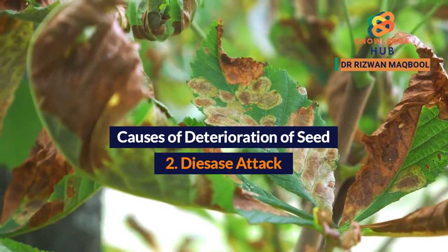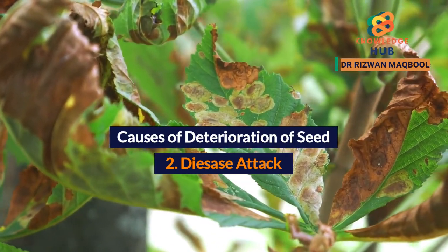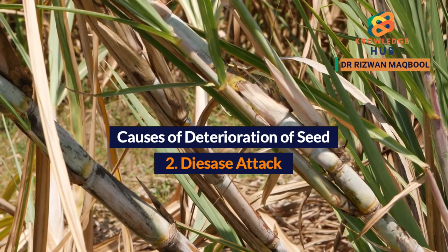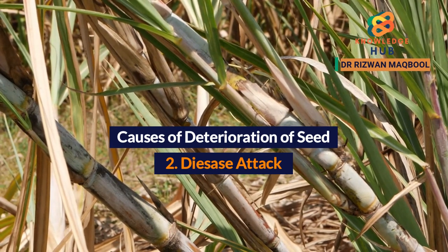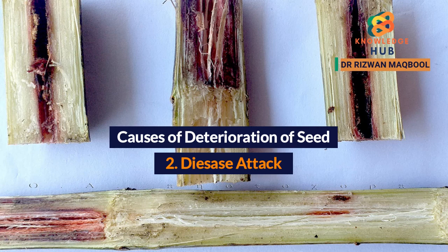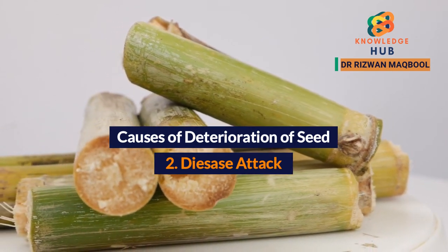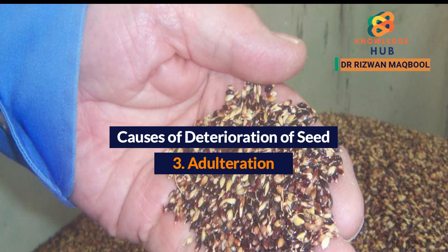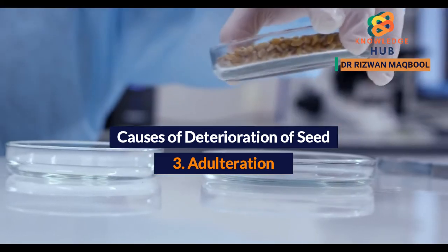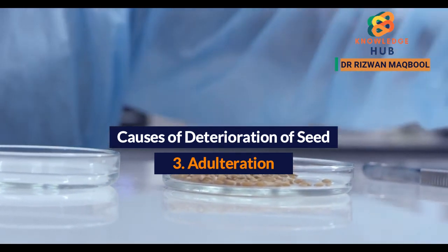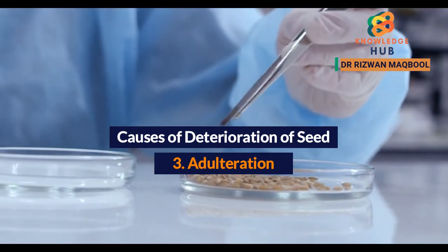2. Attack of diseases — new crop varieties often become susceptible to new races of diseases which are out of seed programs. Similarly, in species that are vegetatively propagated, for example sugarcane, there may be an accumulation of viral, fungal, and bacterial diseases within some of the seed stock of a variety. These are transmitted through the sets from one year to the next and spread the disease. 3. Adulteration — mixing of poor quality seed with good quality seed or mixing of seed of different varieties by some dealers of seed corporations and other seed merchants.